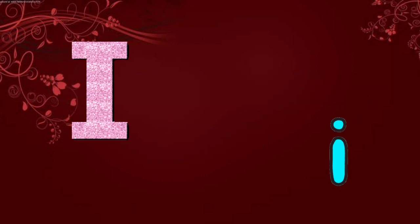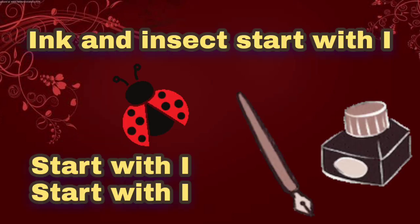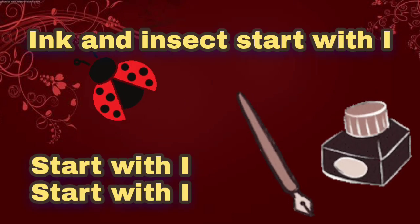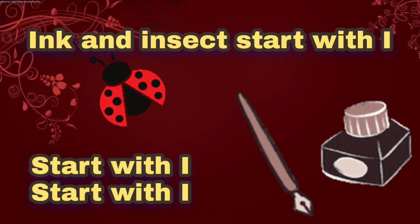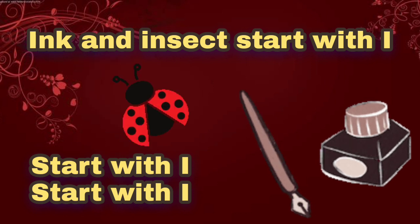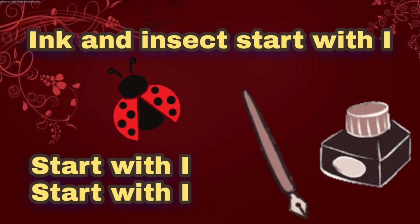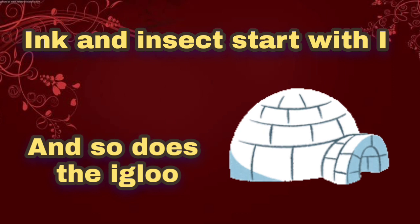Capital I, small i. Ink and insect start with I, and so does the igloo.